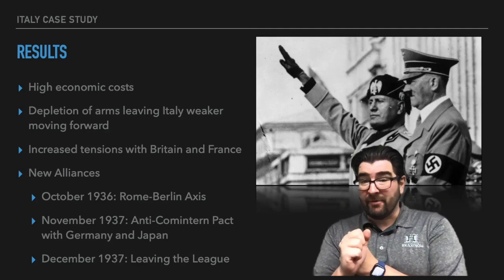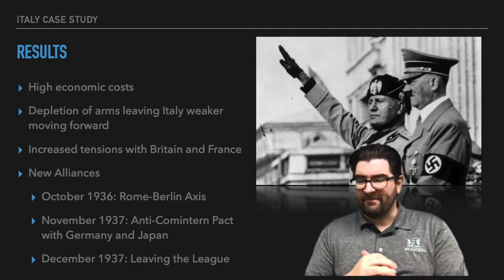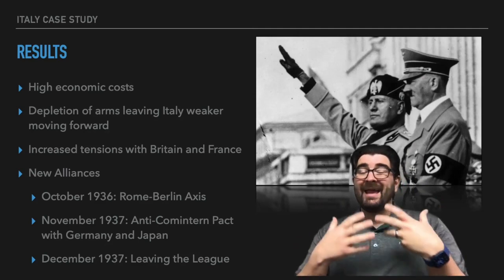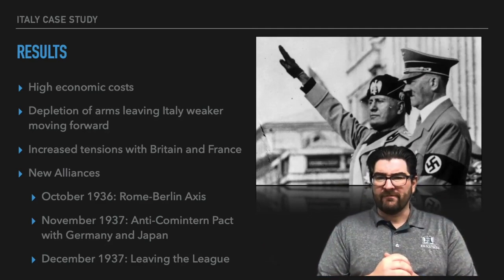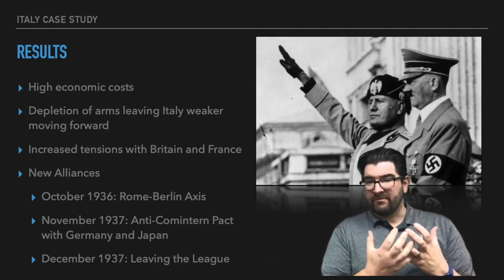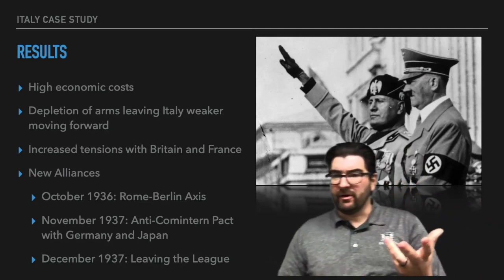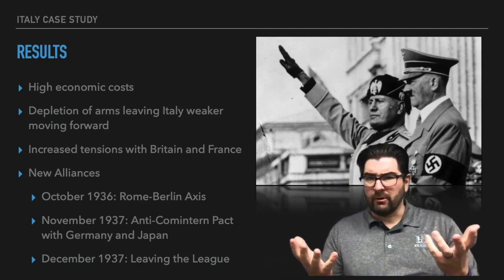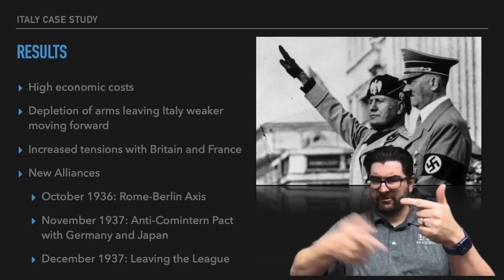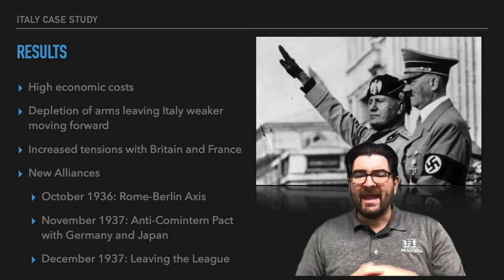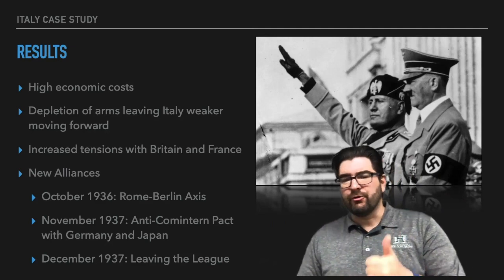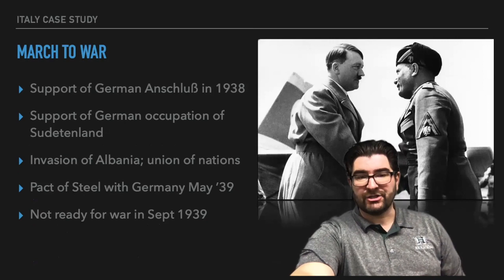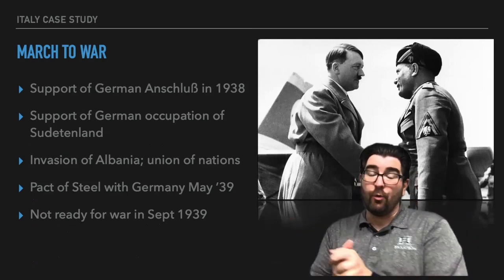Increased tensions with Britain and France, which were not sympathetic towards the fascists in the Spanish Civil War, are going to result in some new alliances for Italy. Benito Mussolini is moving away from Britain and France and moving closer to Germany. In 1936, Adolf Hitler and Benito Mussolini's government signed what's called the Rome-Berlin Axis — this is why we call these countries the Axis Powers during World War II. In November of 1937, Italy will enter into an agreement with Germany and Japan called the Anti-Comintern Pact, where they stand together to stop the spread of international communism. From here, the ball rolls very quickly to the Second World War.